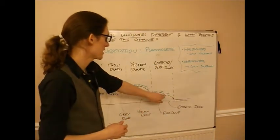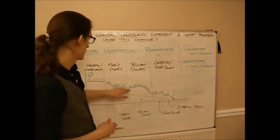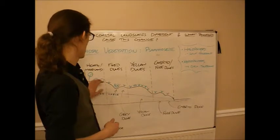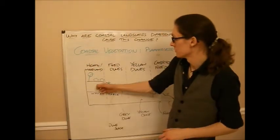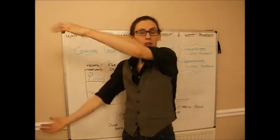But you go from little, teeny tiny little plants down here, to thicker, bigger plants over here, up to woodland here. And that's why it's a succession, it goes from tiny plants up to bigger plants.